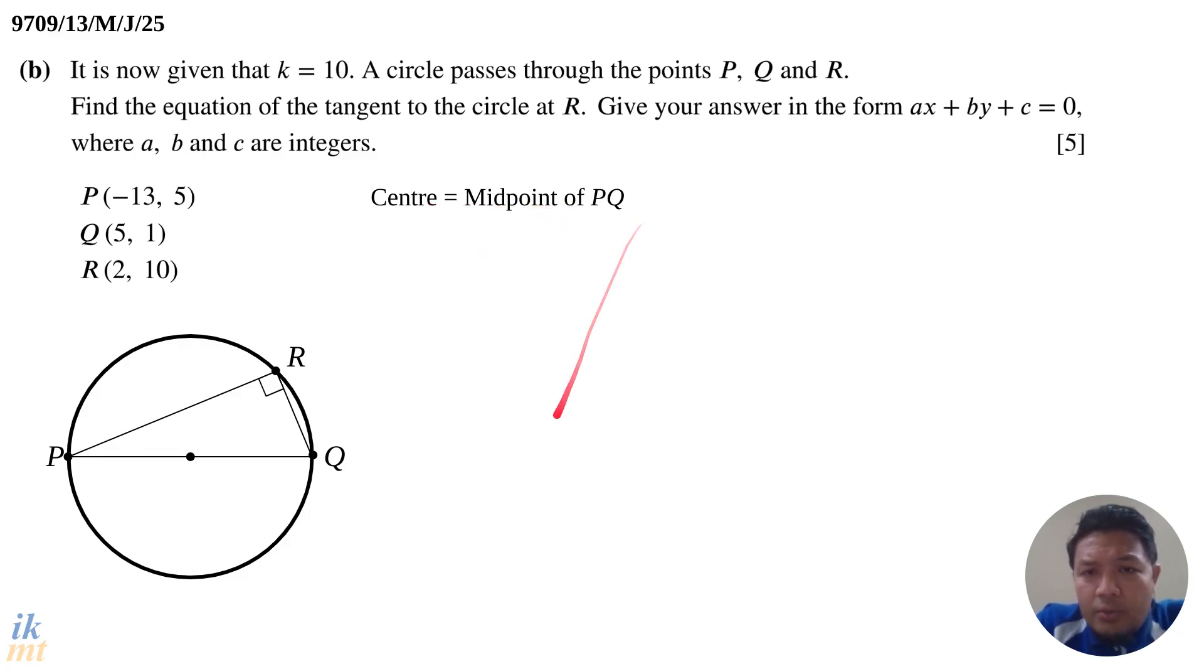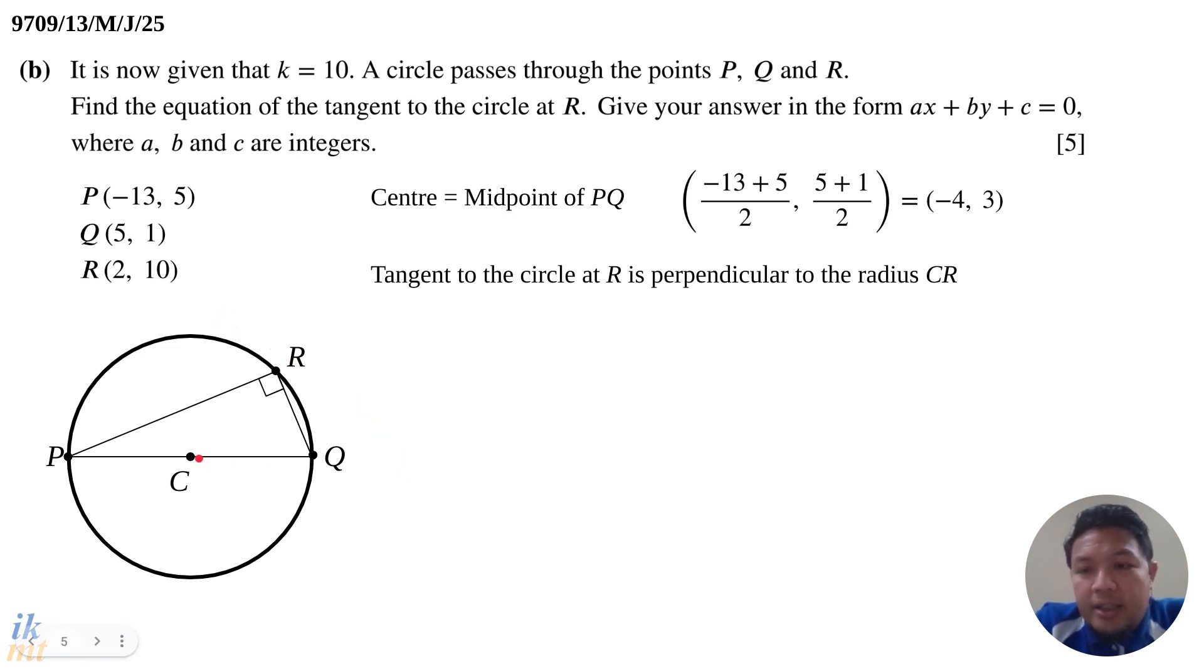Now we have the center which is the midpoint of PQ. We go ahead and find that midpoint of PQ. Let's call it C. We find the midpoint of PQ and that is (-4, 3), that is our center. Now the question wants the equation of tangent to the circle at R. That means there's a tangent line at R. What we should know is a tangent to the circle at any point of tangency would be perpendicular to the radius from the center to that point of tangency. Basically here, tangent to the circle at R will be perpendicular to the radius CR.